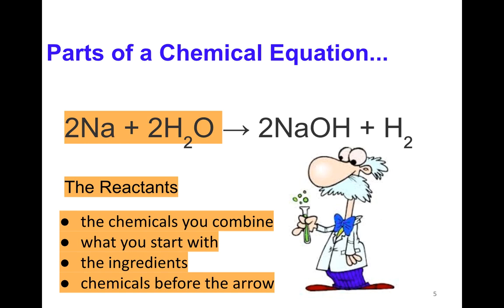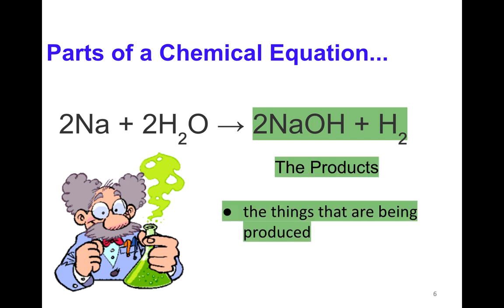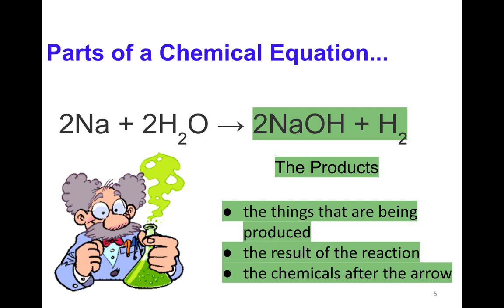You don't have to write all that down, just the stuff you start with. So whatever phrase is going to make you remember that that's the reactants, then that's what you need. And on the right side of the arrow are the products, the things that are being produced, the results of the reaction, the chemicals after the arrow. So things react to produce something.